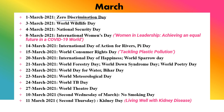Now March: 1st March is Zero Discrimination Day, where we don't discriminate against anyone. 3rd March is World Wildlife Day. 4th March is National Security Day. 8th March is very important — International Women's Day — and its theme appears repeatedly in exams. This year's theme was 'Women in Leadership: Achieving an Equal Future in a COVID-19 World.' 14th March is the International Day of Action for Rivers, also observed as Pi Day.